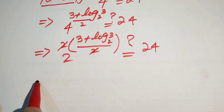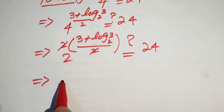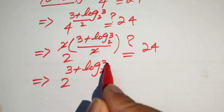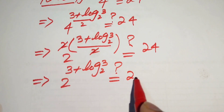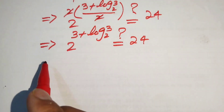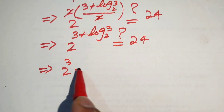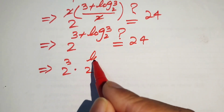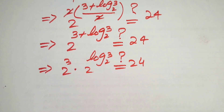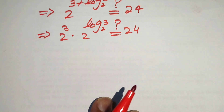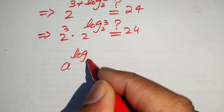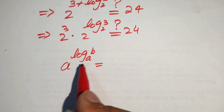The 2 in the exponent cancels with the 2 in the denominator, and we obtain 2 to the power of (3 plus log base 2 of 3). We break this as 2 to the power of 3 times 2 to the power of log base 2 of 3, and check if this equals 24. We apply the property a to the power of log base a of b equals b.